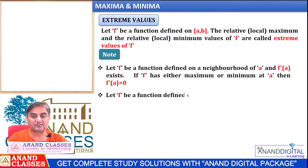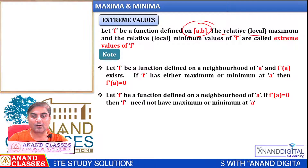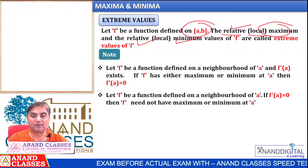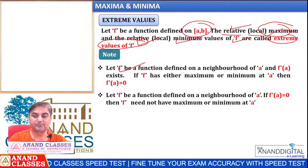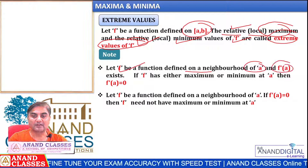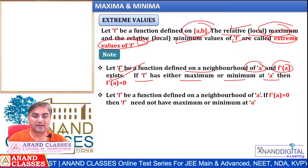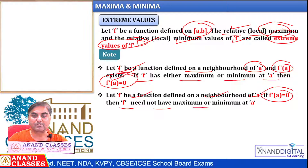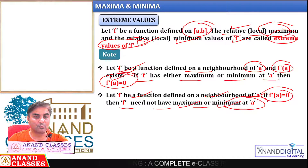Now extreme values: relative and local maximum and minimum values of f are called extreme values of f. If f is defined on the neighborhood of a and f'(a) exists, and if f has either maximum or minimum at a, then f'(a) = 0. But if f'(a) = 0, f need not have maximum or minimum at a — it is not necessarily true.